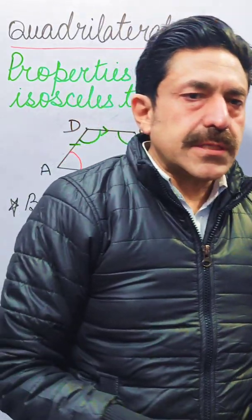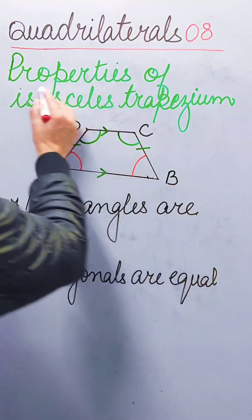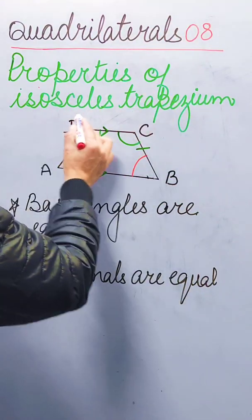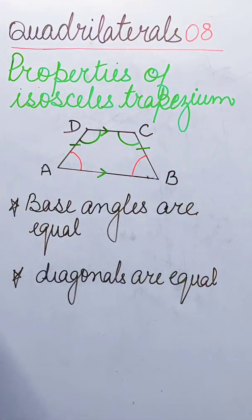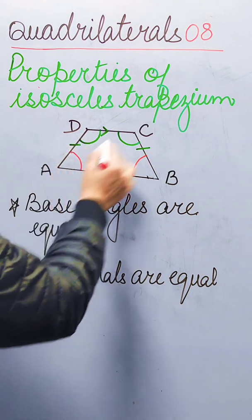In this 8th video of Coordilators, we will discuss the properties of isosceles trapezium. In the last video, we discussed that an isosceles trapezium is a trapezium in which the legs are equal.